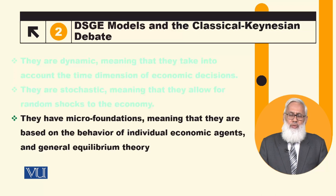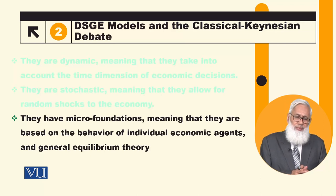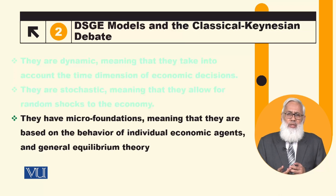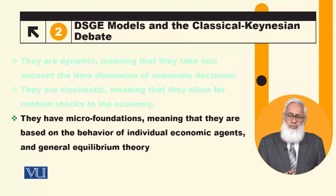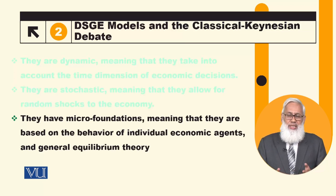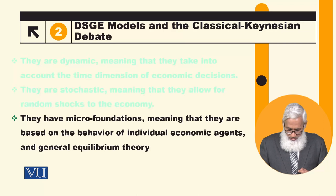Micro-foundation means we use the principles of microeconomics. For example, overall aggregate consumption is built by adding up individual consumption decisions — how individuals make utility maximization decisions. Similarly, aggregate production is built by adding up individual firms and how they make profit maximization decisions.